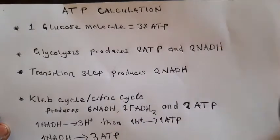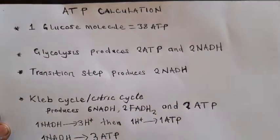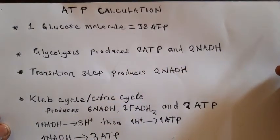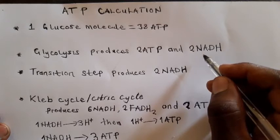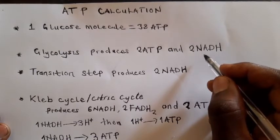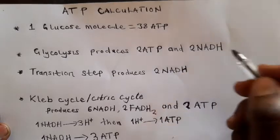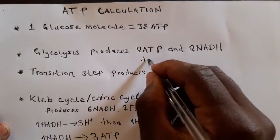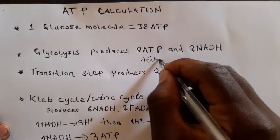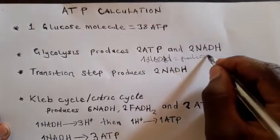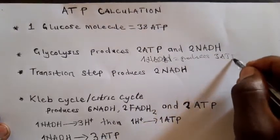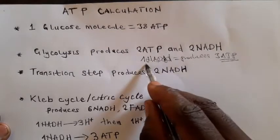First, glycolysis produces about 2 ATP and 2 NADH. NADH is the proton donor, and when it donates protons it generates NAD+. One NADH produces 3 ATP — meaning when NADH donates protons it generates about 3 ATP.